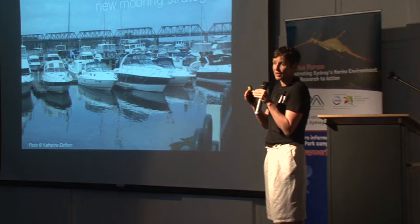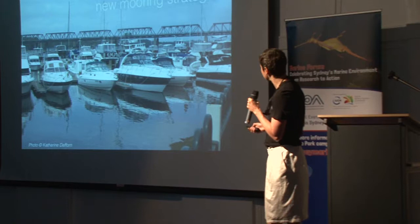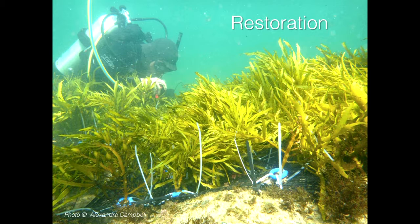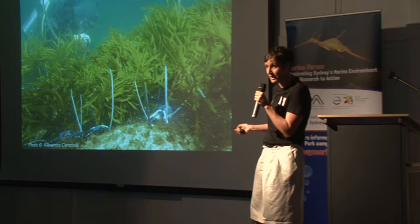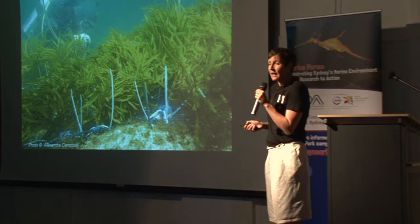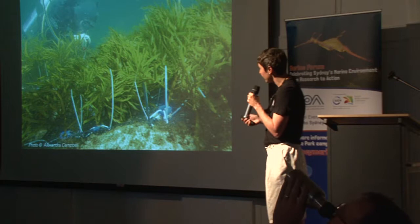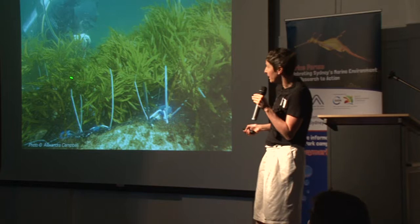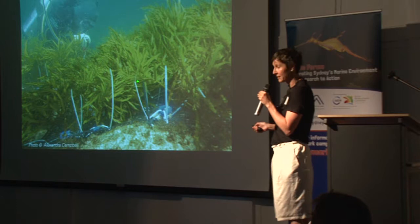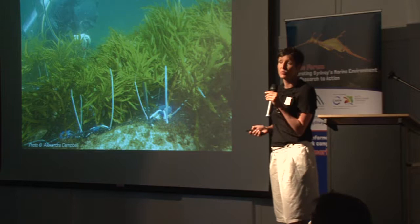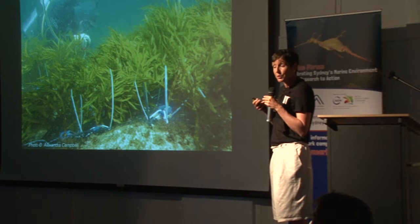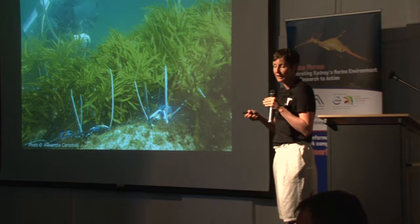Another really great story: the crayweed. It used to occur in Sydney Harbour until the 1970s — thought to have disappeared due to increased nutrients. We have been transplanting adult crayweed plants into the Sydney area, and the results have been quite encouraging. Not only have the plants survived and are doing quite well, but scientists are now finding juvenile plants in the vicinity, which means most likely they are reproducing and producing new plants in the area. We can start to create self-sustaining populations — which would be fantastic.